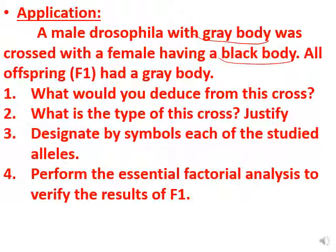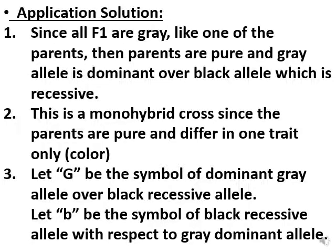Part 4 asks us to perform the essential factorial analysis to verify the results of F1. Since all F1 are gray like one of the parents, the parents are pure, and the gray allele is dominant over the black (which is recessive). The type of cross is monohybrid since the parents are pure and differ in only one trait — the color. Symbols: let capital G be the gray dominant allele and small b be the black recessive allele.